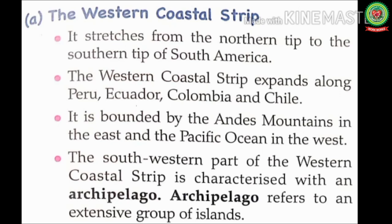The western coastal strip stretches from the northern tip to the southern tip of South America. It expands along Peru, Ecuador, Colombia, and Chile. It is bounded by the Andes Mountains in the east and the Pacific Ocean in the west. The southwestern part of the western coastal strip is characterized with an archipelago — archipelago refers to an extensive group of islands. Here islands means a piece of land surrounded by water on all sides.